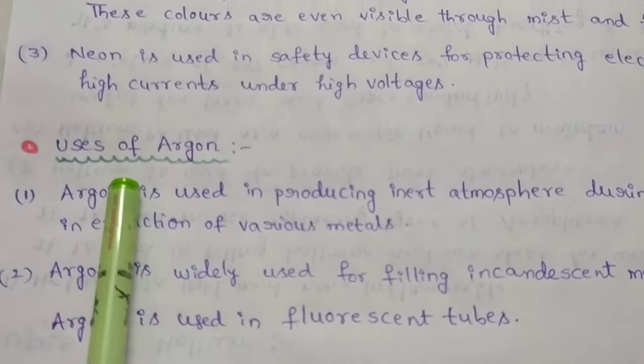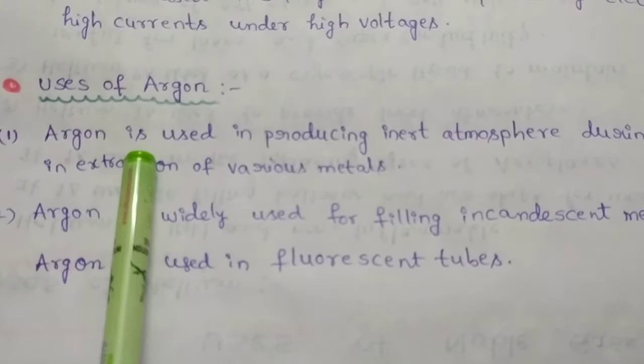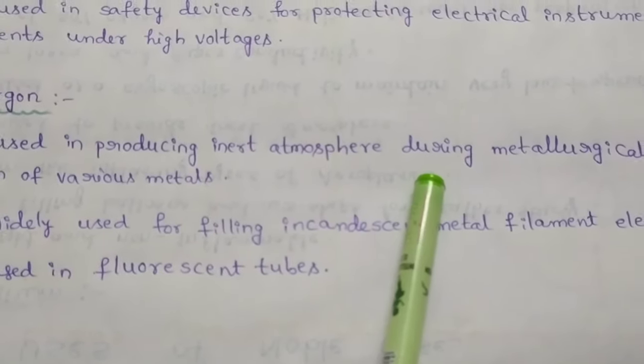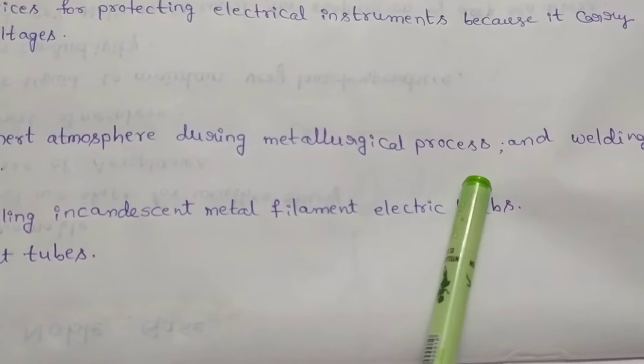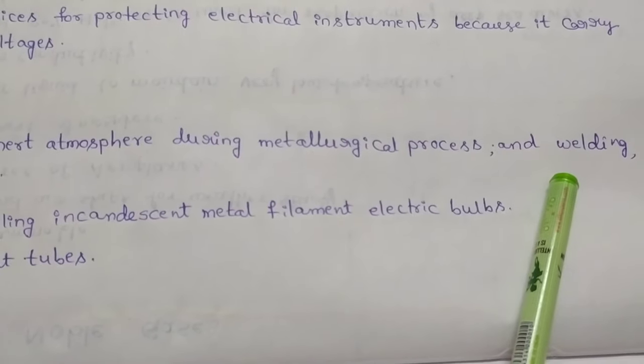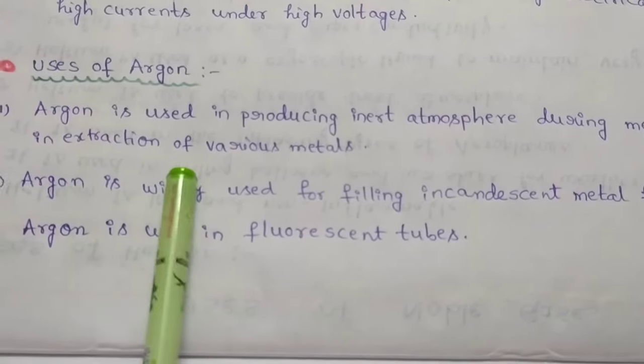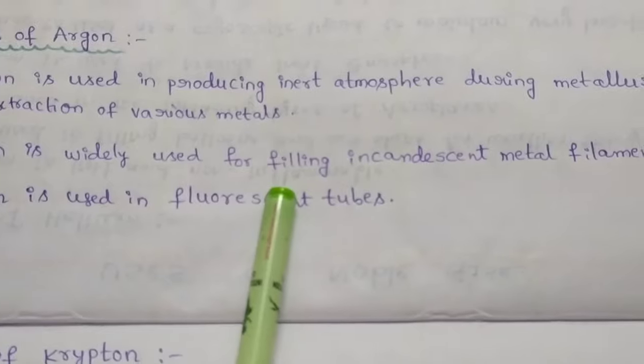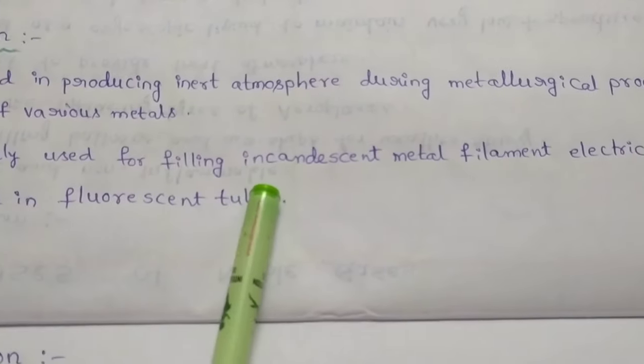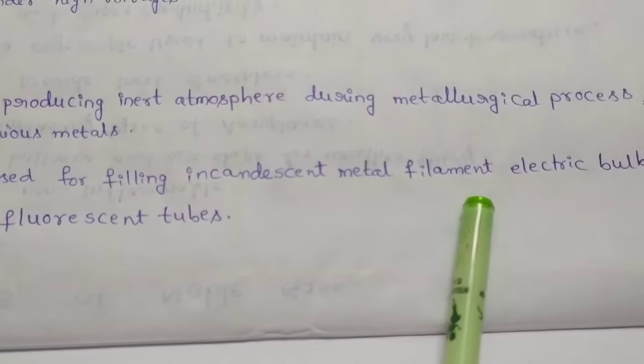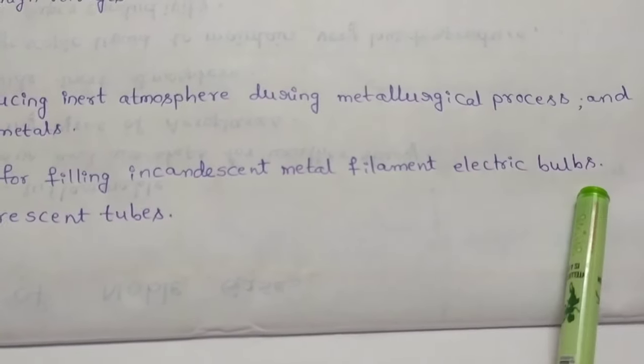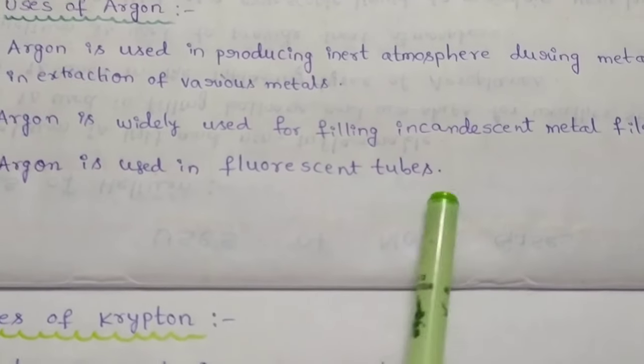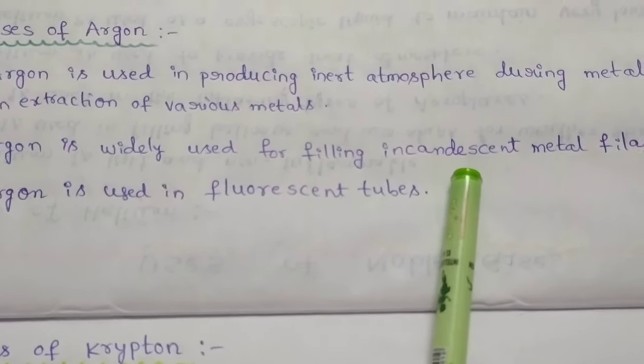Now we discuss the uses of argon. Argon is used in producing inert atmosphere during metallurgical process and for welding in extraction of various metals. Argon is also used in fluorescent tubes, which are one type of bulbs.